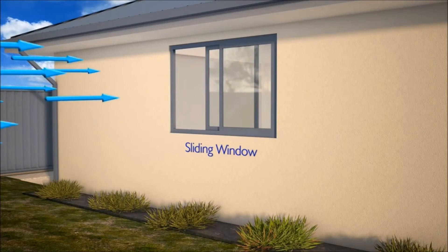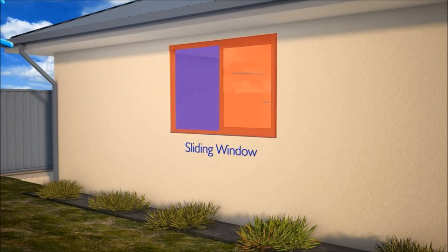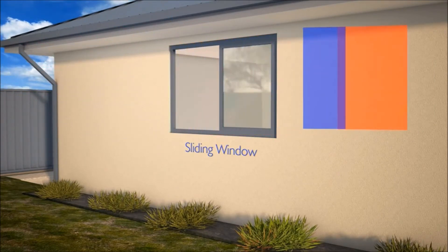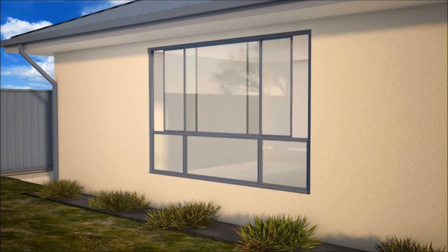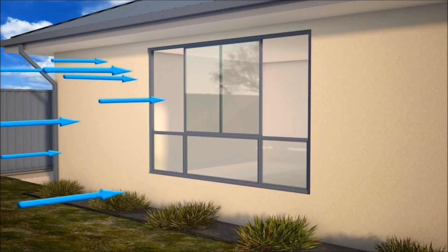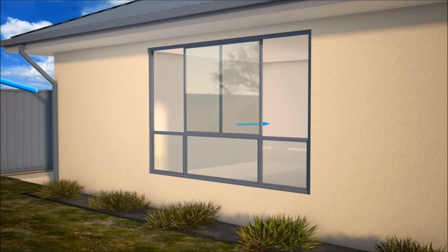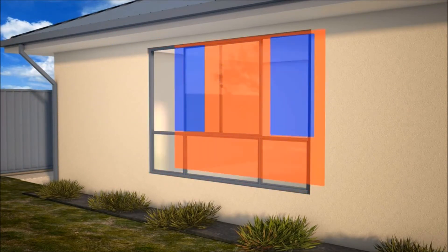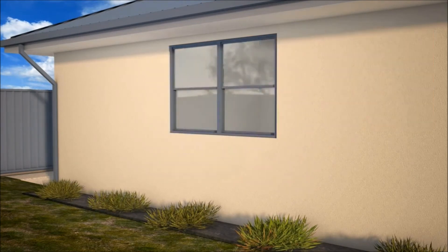Sliding windows have a fixed pane of glass which prevents ventilation through at least one half of the window. At the sizes more typically seen in Australian homes, there are additional fixed panes in the lower third of the window, which further reduces the ventilation available through sliding windows.